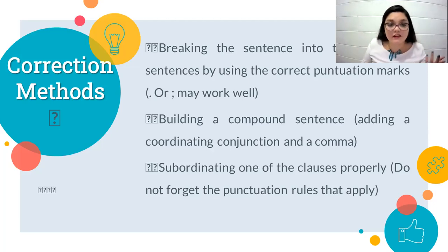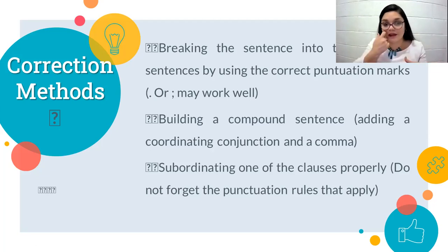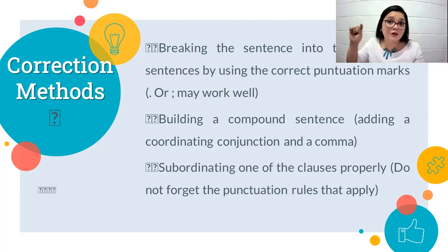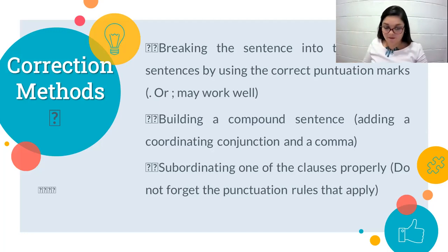A third correction method is subordinating one of the clauses properly. I emphasize 'properly' because if we subordinate the incorrect clause, we are going to commit another mistake called faulty subordination. So you have to be very careful. Don't forget the punctuation rules: if your subordinate clause is at the beginning, you need a comma and then you continue with an independent clause. If you start with an independent clause, then you have the subordinating conjunction and the other clause without a comma. You can check the previous video where I explained these punctuation rules.